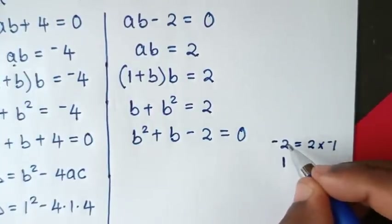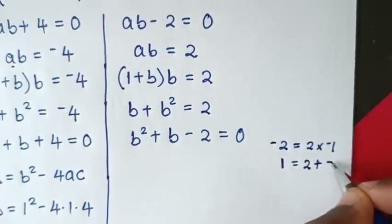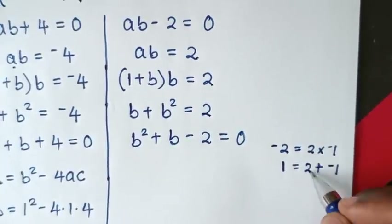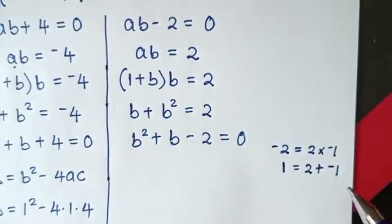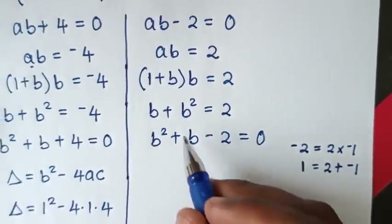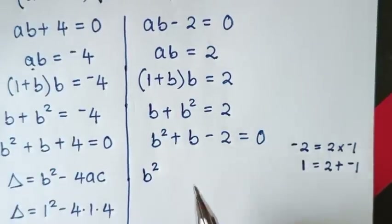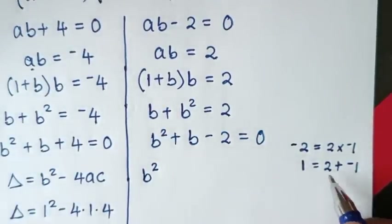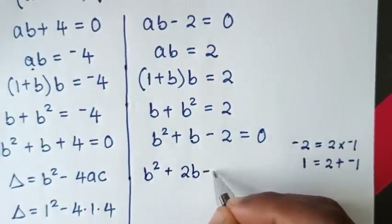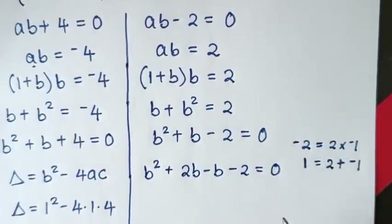2×(-1) = -2. Using these factors: 2 + (-1) = 1, which is the same as 2-1 = 1, matching the coefficient of b. So we split: b² + 2b - b - 2 = 0.